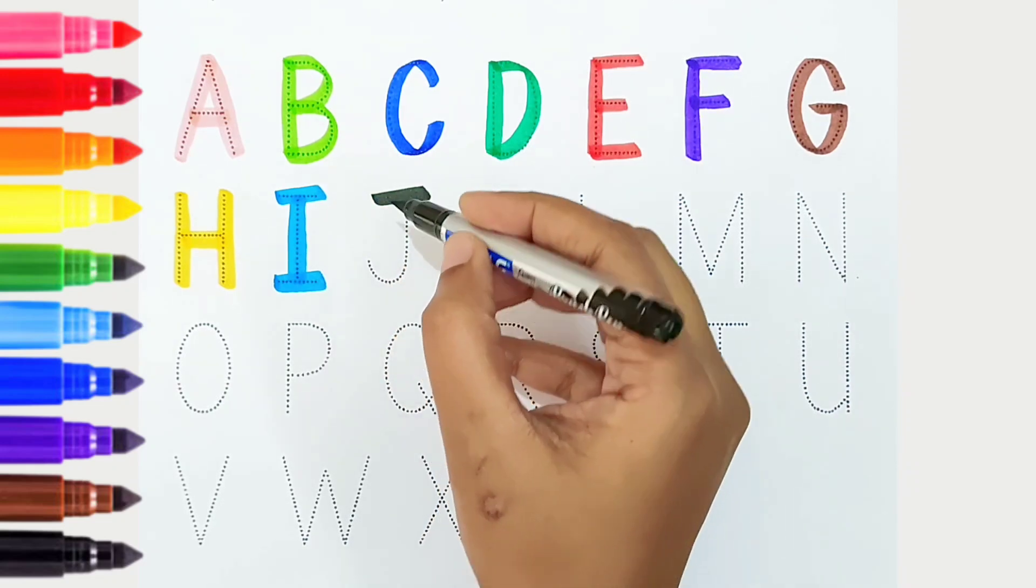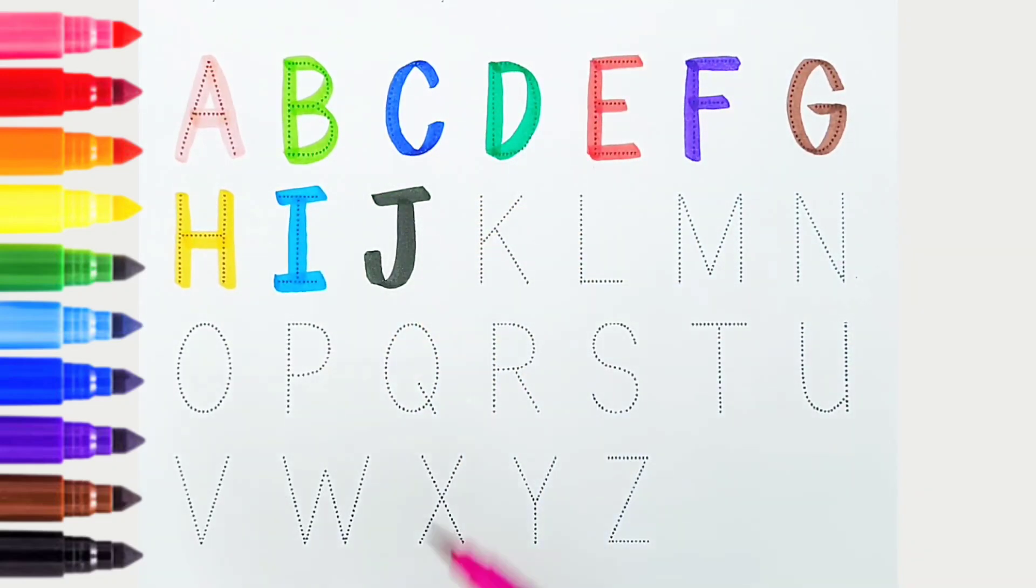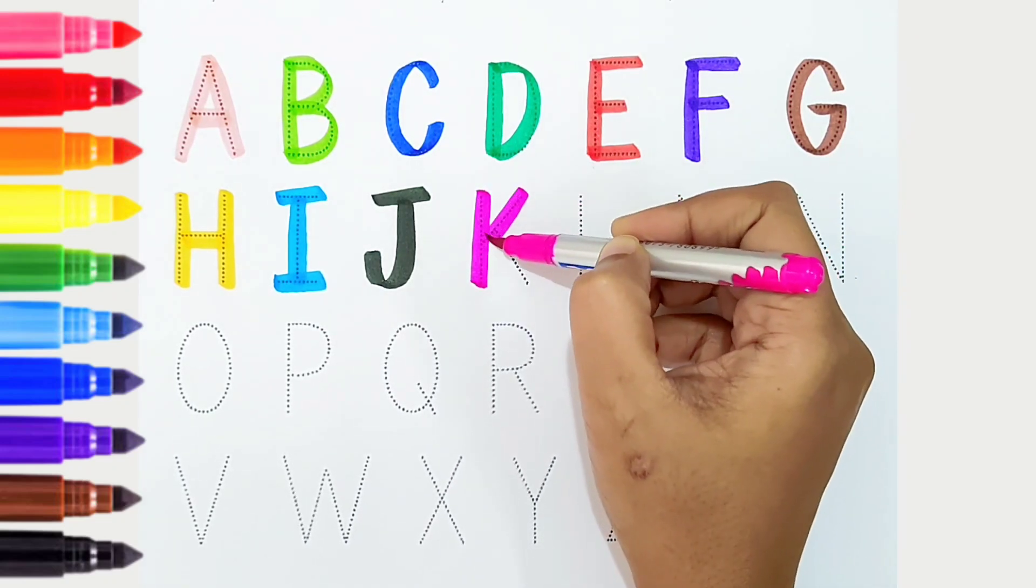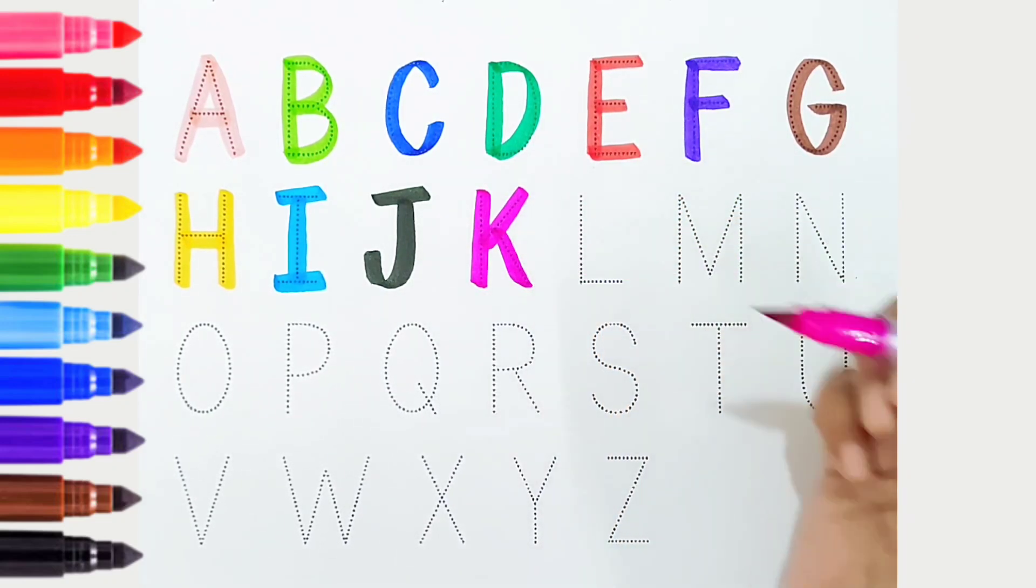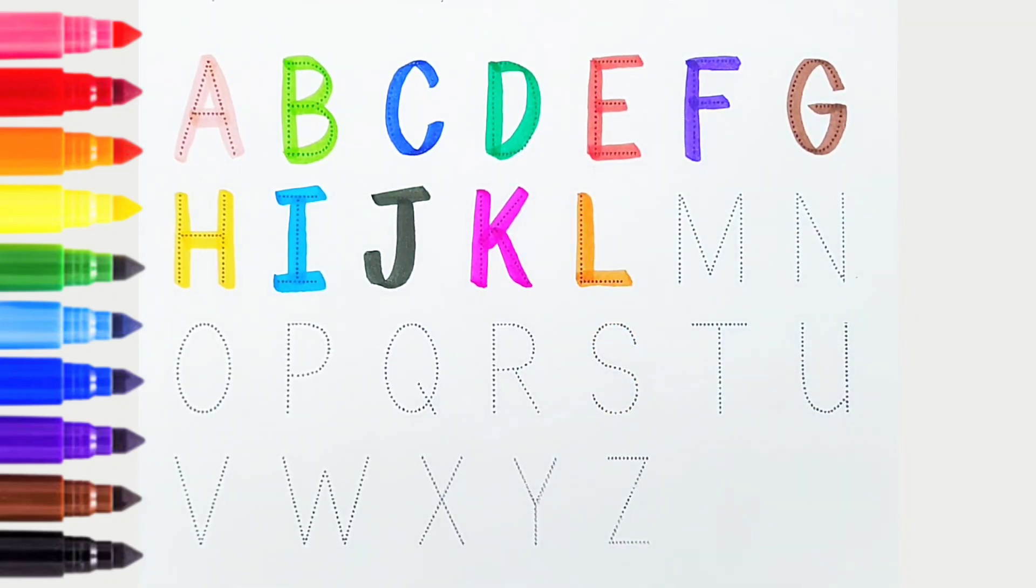J, black color. J is for jug. K, dark pink color. K is for kangaroo. L, orange color. L is for lemon.